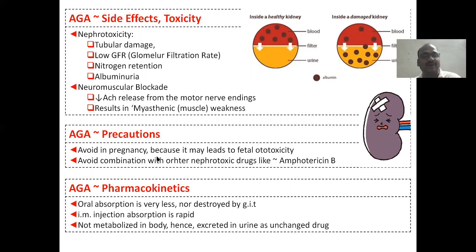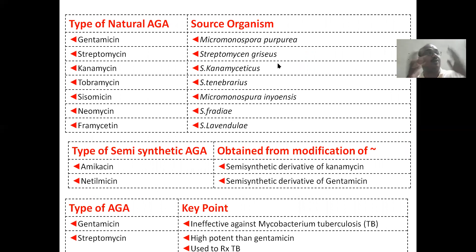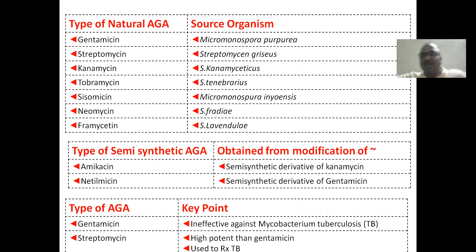Precautions: avoid in pregnancy. For pharmacokinetics, oral absorption — all are normal only. Very, very important: gentamicin is obtained from Micromonospora purpurea. Streptomycin is obtained from Streptomyces griseus. You know that antibiotics — we prepare them from microorganisms to kill microorganisms. Preparing from microorganism but used to kill microorganisms — that is a specialty of antibiotics, not antimicrobial agents.